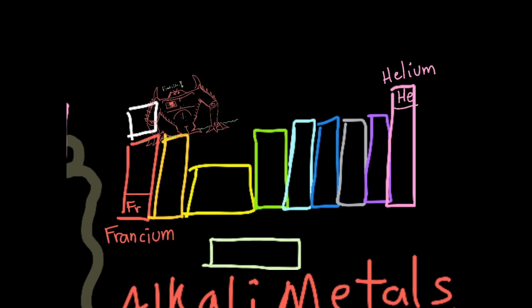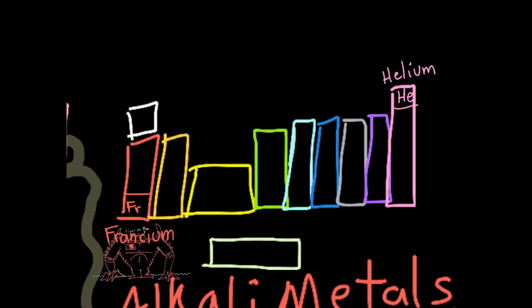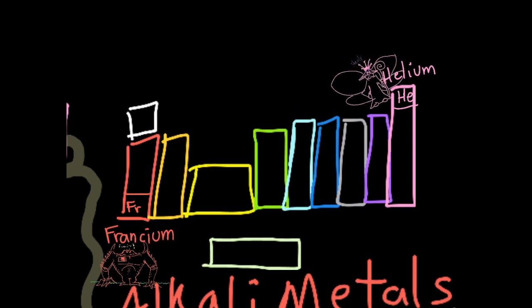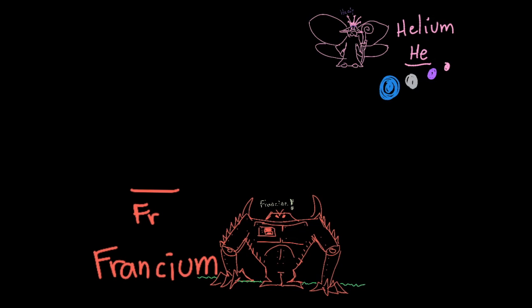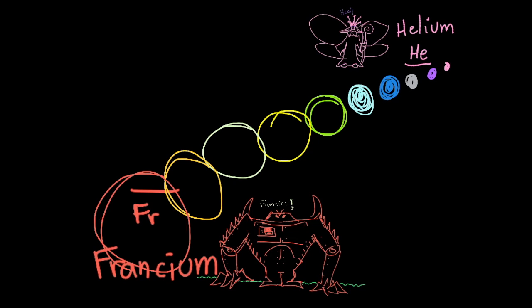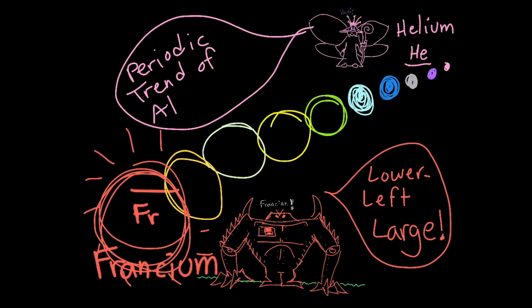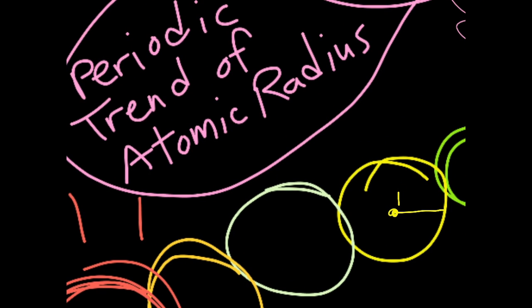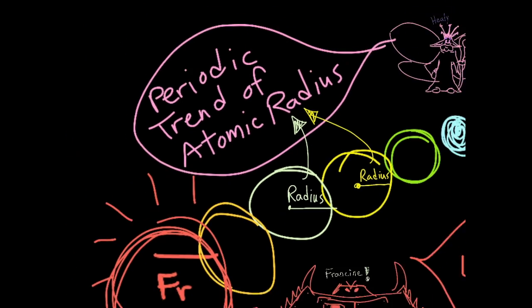Francine and Healy, the largest and smallest members of Little Earth, were created to remind us of Francium and Helium, the largest and smallest elements of the real world. Elements closer to the lower left of the table are larger in size. This is called the Periodic Trend of Atomic Radius. If you imagine an atom being shaped like a ball, the radius of the ball is a good way to measure its size.